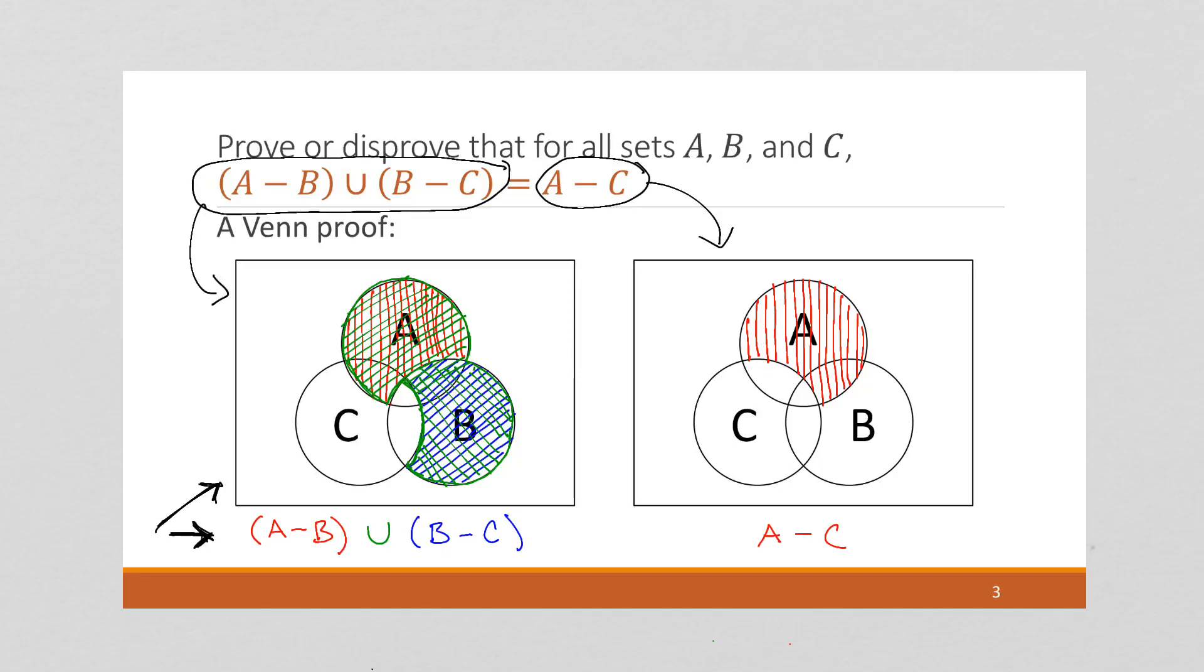So we look at these two. Are these two, do they have the same area shaded? Well, there's some areas that are the same. Right? This part of A is the same. And this area here of A and B is the same.